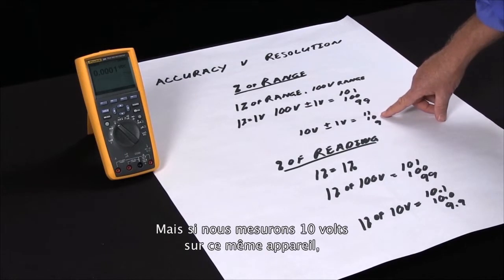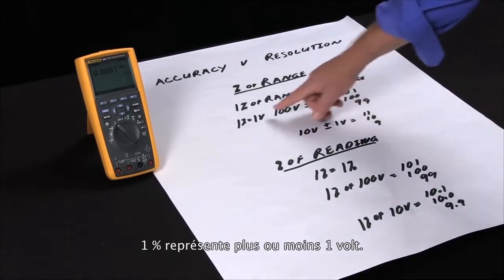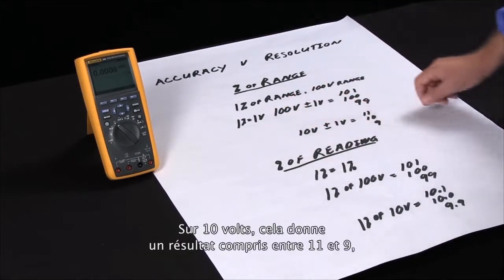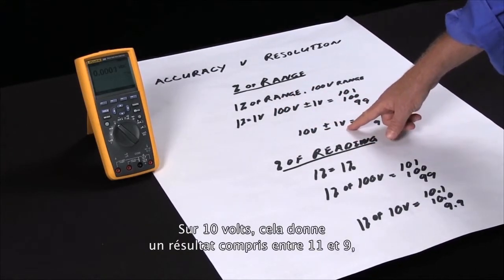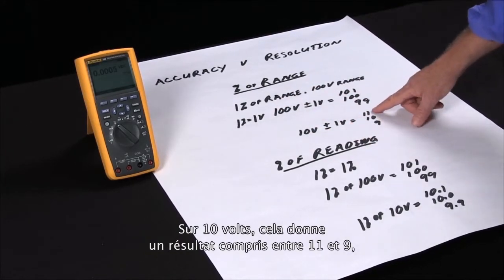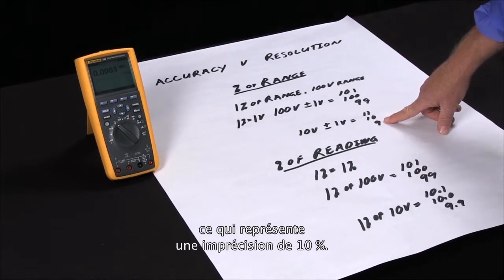But if we're measuring ten volts on this same meter, the one percent is plus or minus one volt. On a ten volt signal, plus or minus one volt will give us between eleven and nine, which is actually an inaccuracy of ten percent.